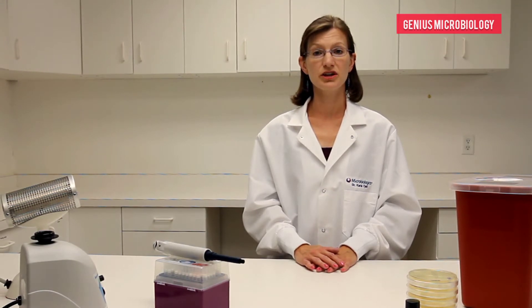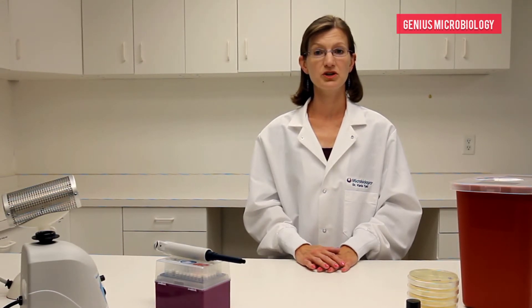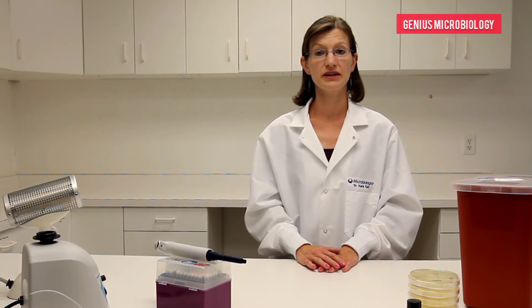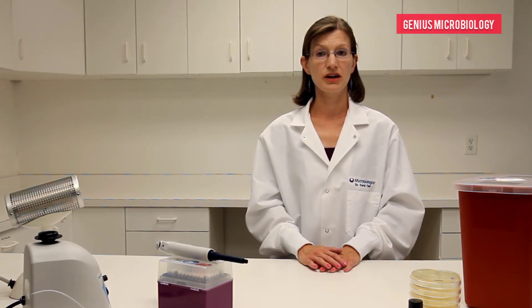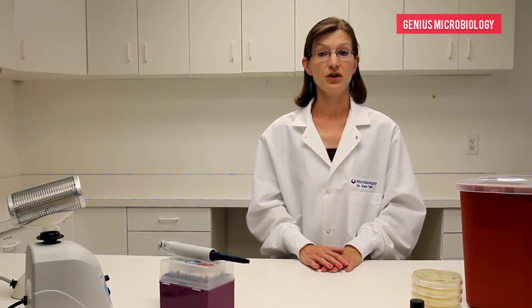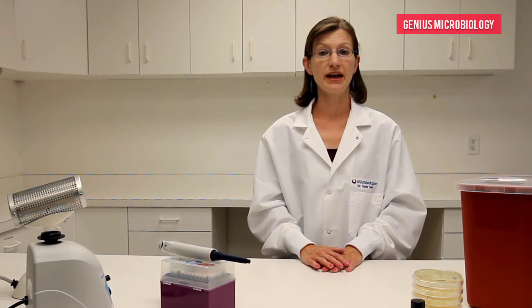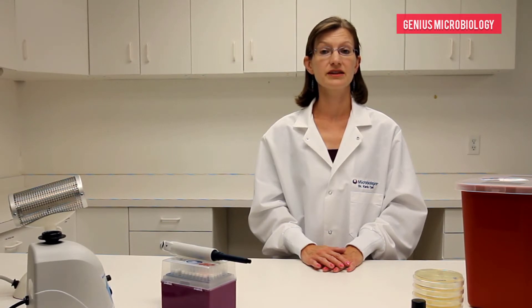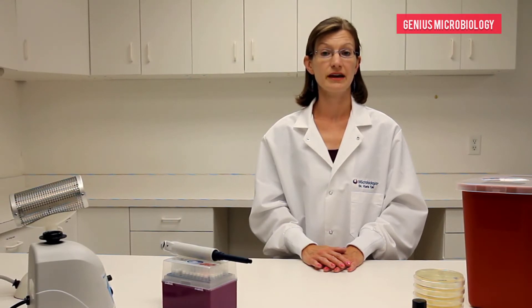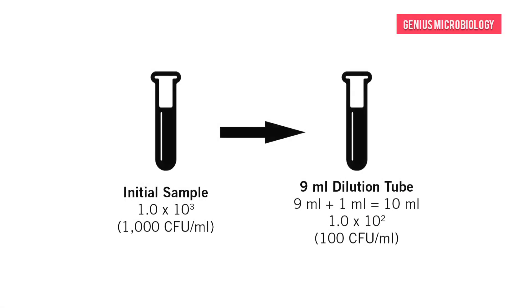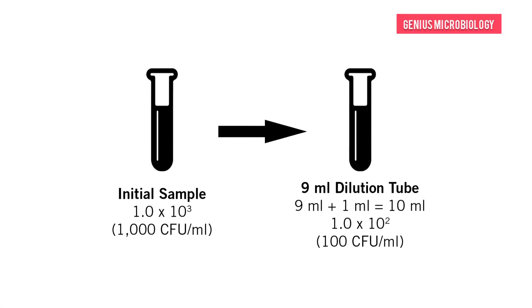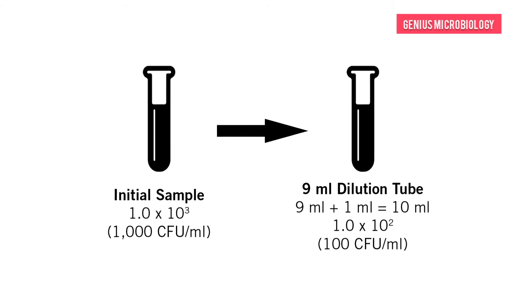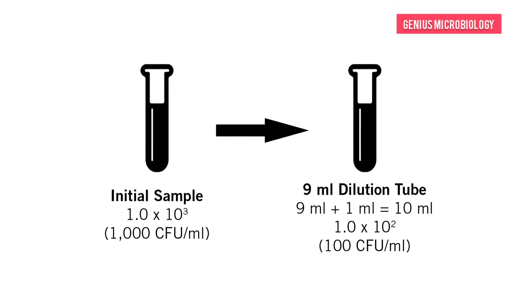A single log dilution is a 10-fold dilution, which means the concentration is decreased by a multiple of 10. To complete a 10-fold dilution, the ratio must be 1 to 10. The 1 in the ratio represents the amount of sample added and the 10 represents the total size of the final sample. For instance, a sample size of 1 milliliter would be added to 9 milliliters of diluent to equal a total of 10 milliliters.